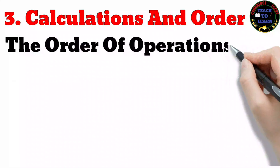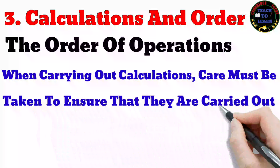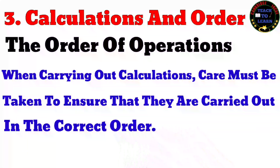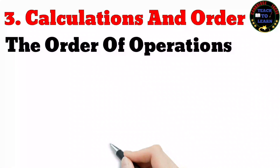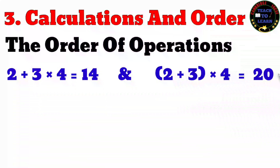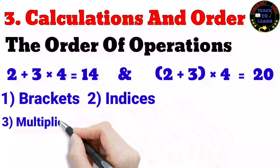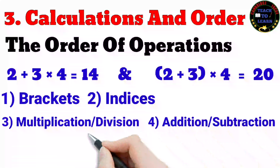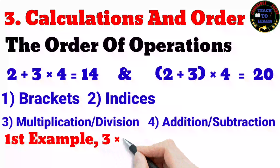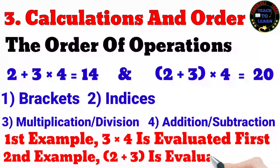When carrying out calculations, care must be taken to ensure they are done in the correct order. For example, 2 + 3 × 4 = 14, but (2 + 3) × 4 = 20. The reason different answers are obtained is that by convention, operations have different priorities — this is the order of operations.